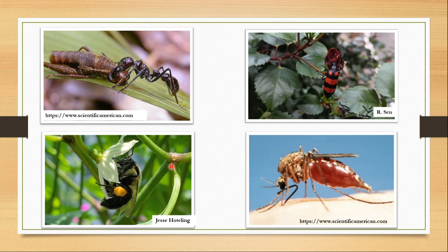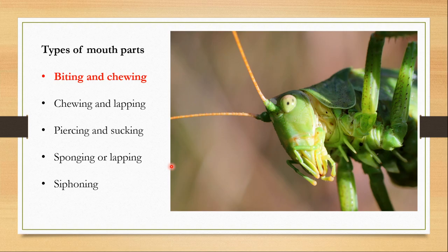Over billions of years, insects have evolved special mouthparts to feed on specific types of food. Depending on how these mouthparts work and what kind of food they eat, there are different types of mouthparts, and I am going to talk about five types of mouthparts today.